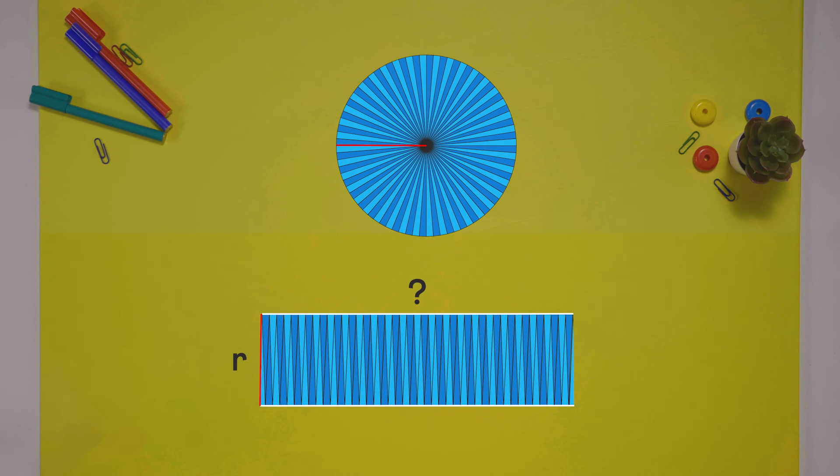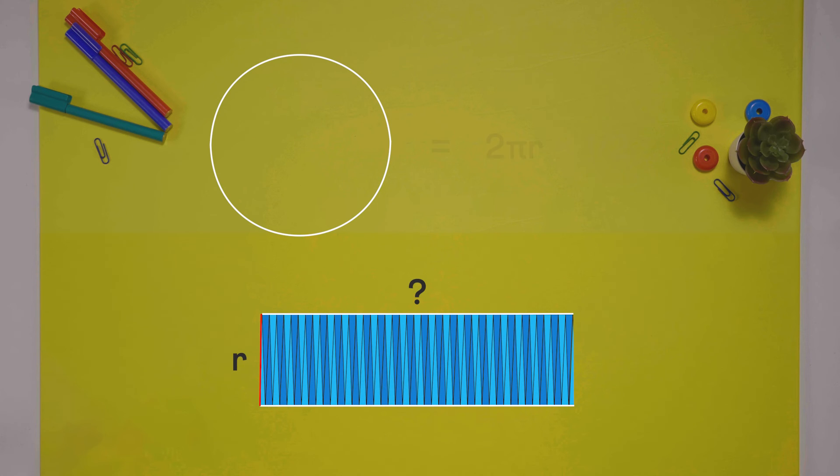We know that both opposite sides combined make the circle's boundary or the circumference, which is 2 pi r. So, this side must be half of that, which is pi r.